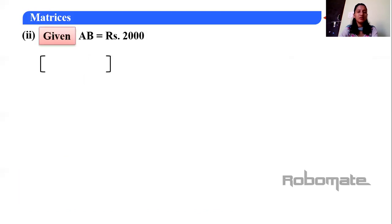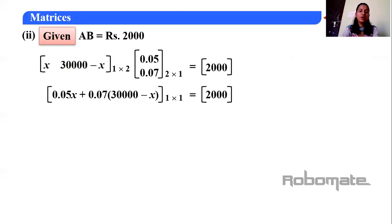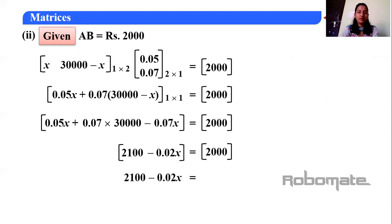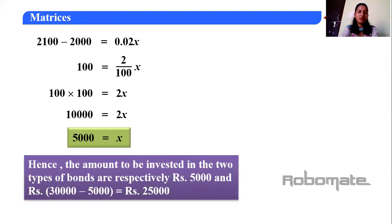For the second part, AB = 2000. Setting up the same equation: 0.05x + 0.07(30000−x) = 2000. Solving, x = 5,000. So bond A gets Rs 5,000 and bond B gets Rs 30,000 − 5,000 = Rs 25,000.